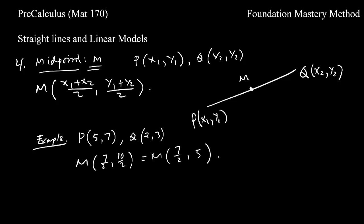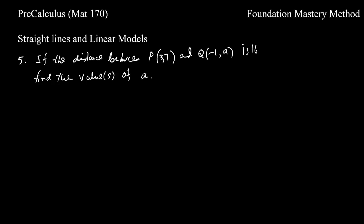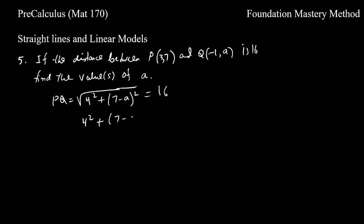So the midpoint is (7/2, 5). Now let's take an example: if the distance between P(3,7) and Q(-1, a) is given as 16, find the value of a. Using the distance formula: PQ = square root of (3-(-1))² + (7-a)² = 16, which gives square root of 4² + (7-a)² = 16.